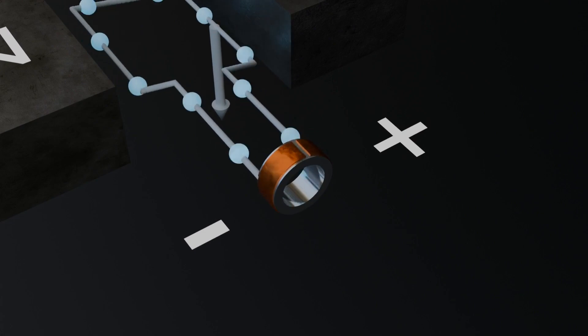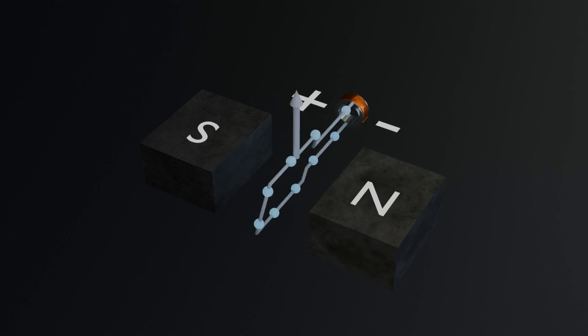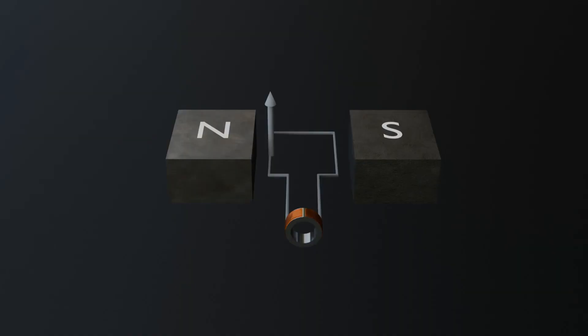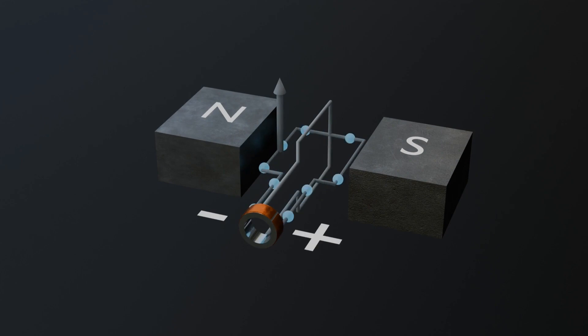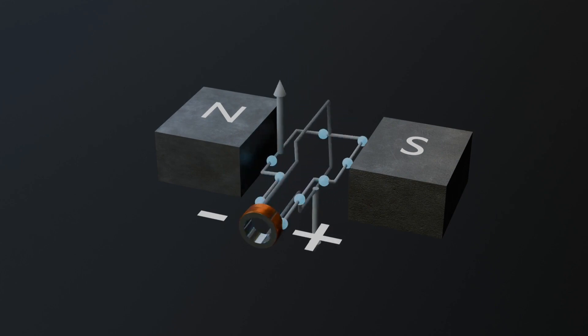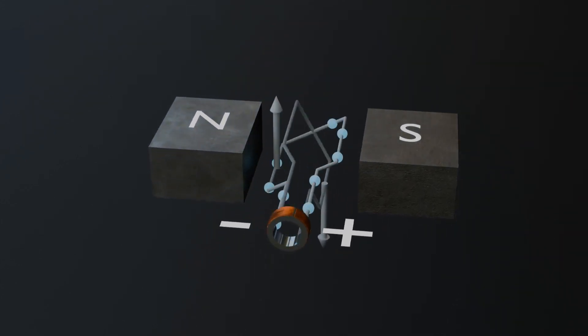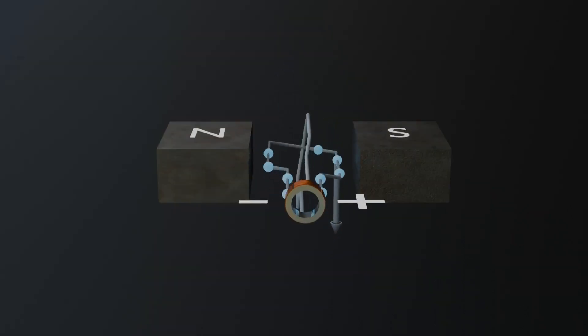To address the second issue, where the tangential component of the force diminishes as the coil rotates, we can use a simple but effective modification, adding more coils to the system. For instance, if we add another coil to the setup and design it so that the current starts flowing through the second coil when the first one rotates by 45 degrees, the motor's performance improves significantly. With this arrangement, as one coil reaches the point where its tangential force becomes weaker, the second coil takes over, ensuring that there is always a strong force available to drive the rotation.